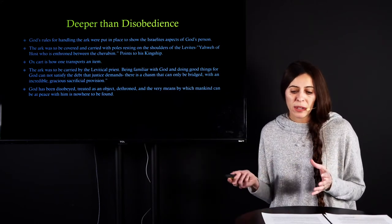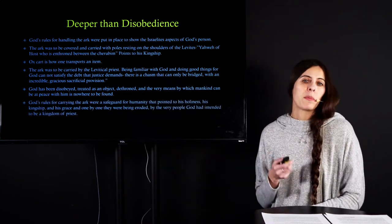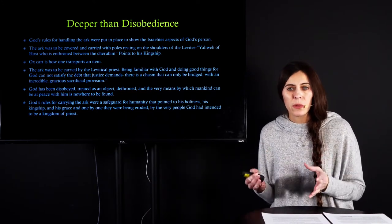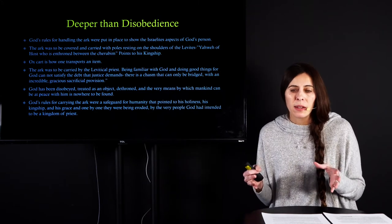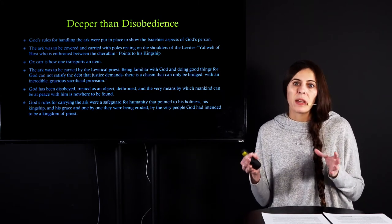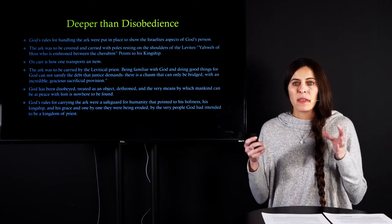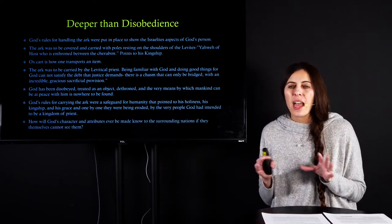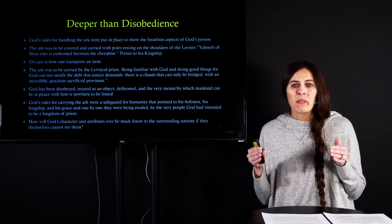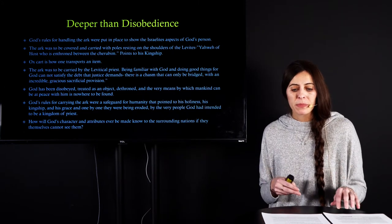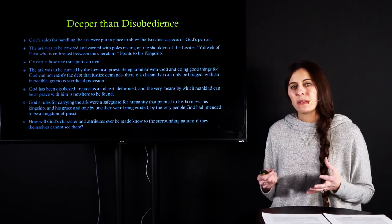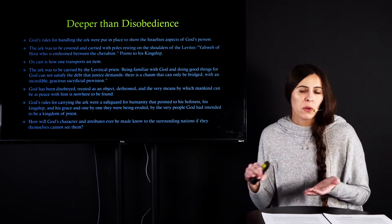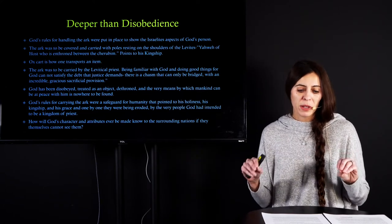God's rules for character and the ark, they were a safeguard for humanity. And they pointed to his holiness, and they pointed to his kingship, and they pointed to his grace. And one by one, they were being eroded by the very people God had designated to be a kingdom of priests. And this leaves the question, how can God's character and attributes ever be made known to any of the nations if they themselves cannot see it?